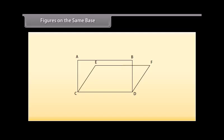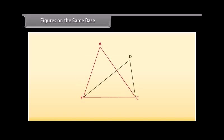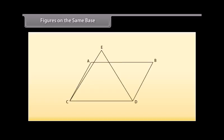Figures on the same base. Look at this figure. We have got two figures here: a rectangle A-B-C-D and a parallelogram C-D-E-F. We can see that both the figures are on the same base, C-D. Similarly, in this figure, triangle A-B-C and triangle B-C-D are on the same base, B-C. Here, triangle E-C-D and parallelogram A-B-C-D are on the same base, C-D.